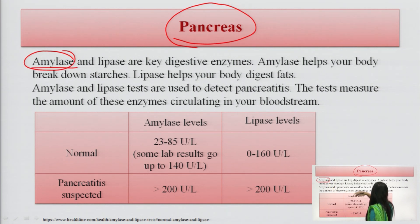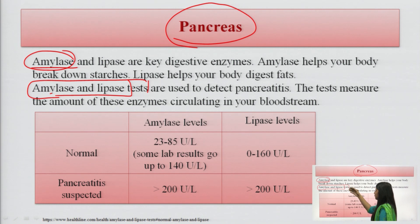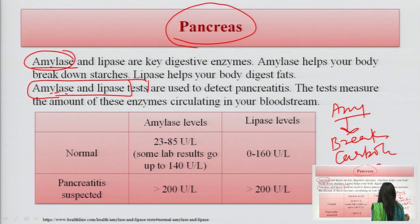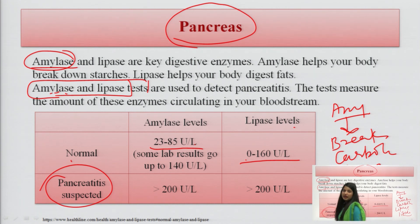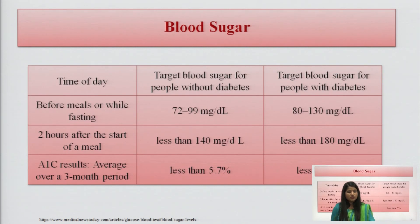For pancreas assessment, the tests are amylase and lipase. Amylase is used for the breakdown of carbohydrates, and lipase is used for the breakdown of fats. The normal value for amylase is 23 to 85 units per liter, and for lipase it is 0 to 160 units per liter. If the values increase to more than 200 units per liter for either, pancreatitis can be suspected.